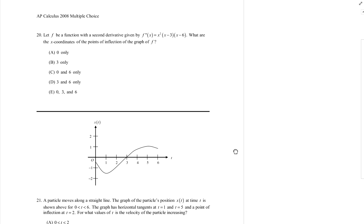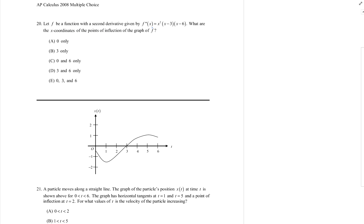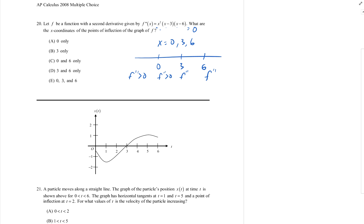Number 20. f is a function whose second derivative is given. What are the x-coordinates of the points of inflection? The candidates are when f double prime equals 0 or is undefined — that's x equals 0, 3, or 6. Checking the sign of f double prime: before 0 it's positive; between 0 and 3 it's positive; between 3 and 6 it's negative; greater than 6 it's positive. Where does it switch concavity? At x=3, from positive to negative, and at x=6, from negative to positive. So x=3 and x=6 are the inflection points.